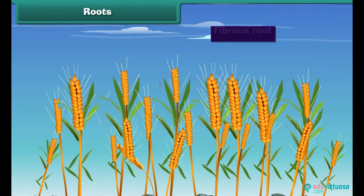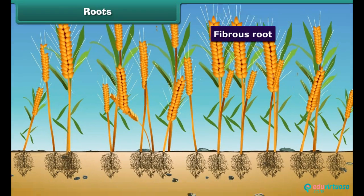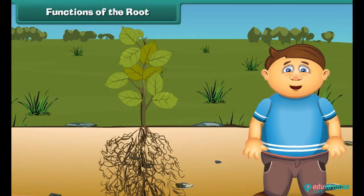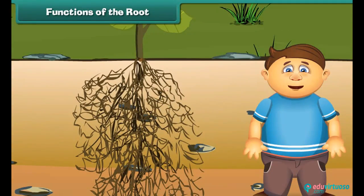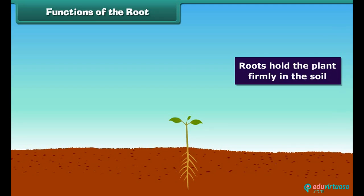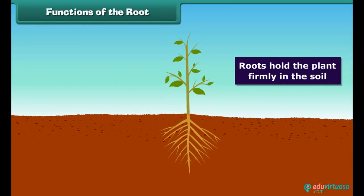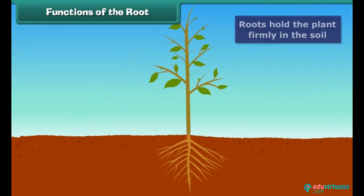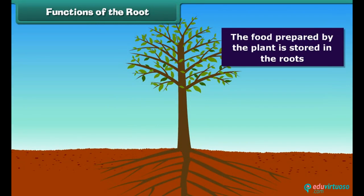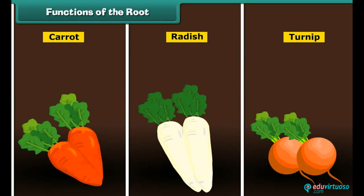In a fibrous root, a number of almost equal-sized roots are attached to the end of the stem — that is, there is no main root like a tap root. This kind of root is present in grass and wheat. Roots hold the plant firmly in the soil. They also absorb water and nutrients from the soil and send them to other parts of the plant. Roots also store food in some plants such as carrot, radish and turnip, and we eat these roots to get nutrition.